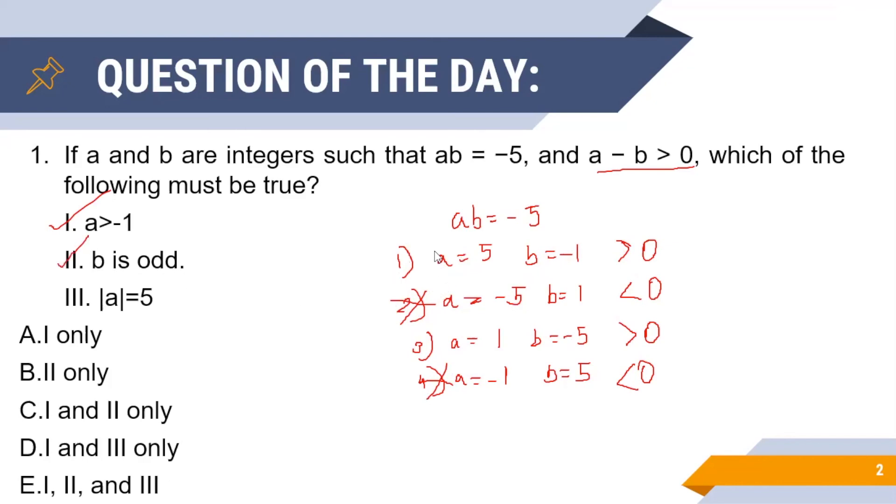In case one, we see the modulus of a is five, but in case three the modulus is one and not five, and hence option three does not hold for case three. And hence we conclude that only one and two are always true, and hence option C is the correct one.